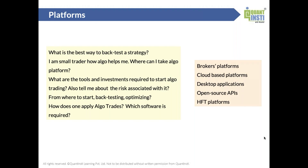How does one apply algo trades? Which software is required? There are different sources through which you can get a trading platform. One is through your broker. There are a lot of platforms offered by different brokers in different parts of the world. Interactive Brokers is one of the most popular ones when it comes to automated trading globally. Most brokers do have their APIs which they have created and made available for use by their clients.